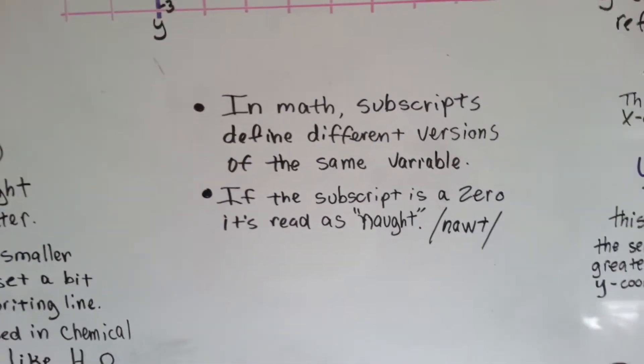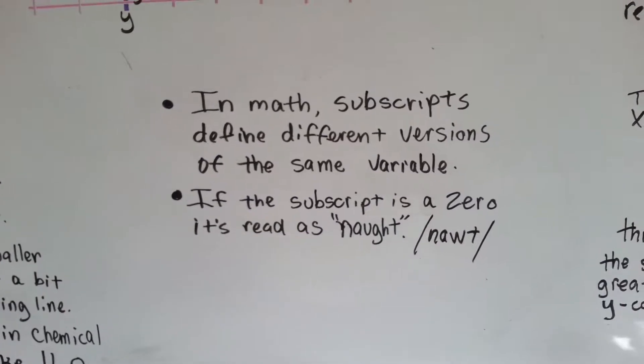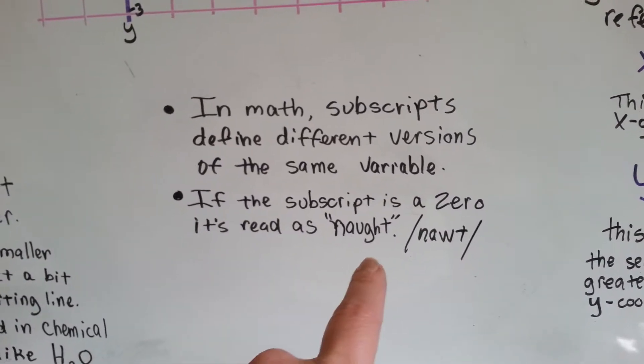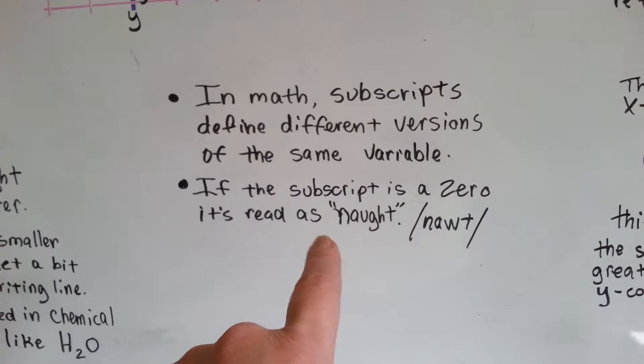But in math, subscripts define different versions of the same variable. If a subscript is a zero, it's read as not.